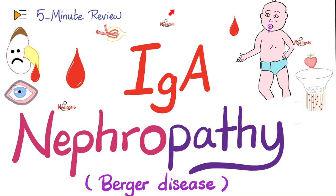What is going on people? It's Medicosis Perfectionarius, where medicine makes perfect sense. Let's continue our 5-minute review playlist. In previous videos, we talked about post-streptococcal glomerulonephritis and rapidly progressive glomerulonephritis. Today, we will talk about IgA nephropathy, or IgA disease, or IgA vasculitis, also known as Berger disease.